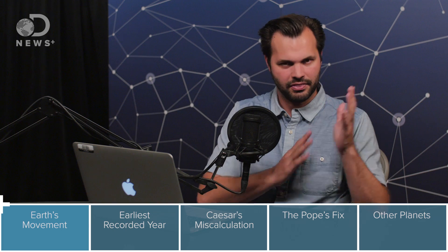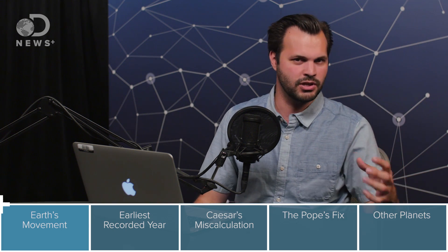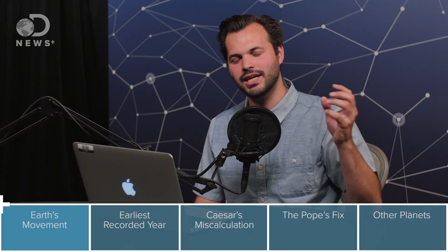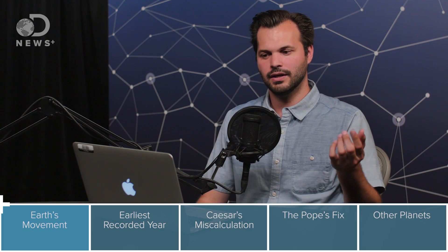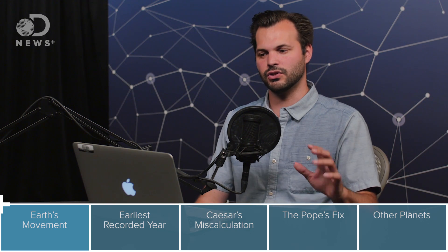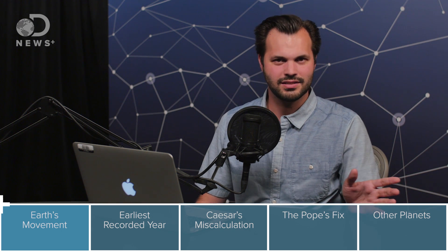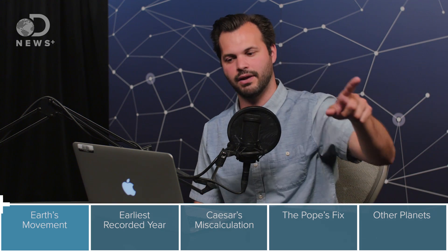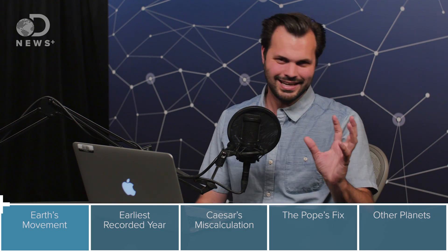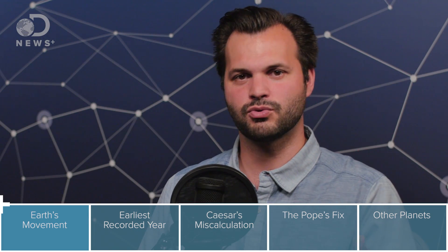We started this series talking about the day and how a day is measured by the rotation of the Earth around its axis. And the year is really easy to grasp if you can get that. Like the rest of the planets in the universe, the Earth is going all around the Sun in an orbit. The Earth is not as heavy as the Sun — the Sun is in the middle because it's got so much mass, holding 99% of the mass of the whole solar system. Lighter things revolve around heavier things, right?